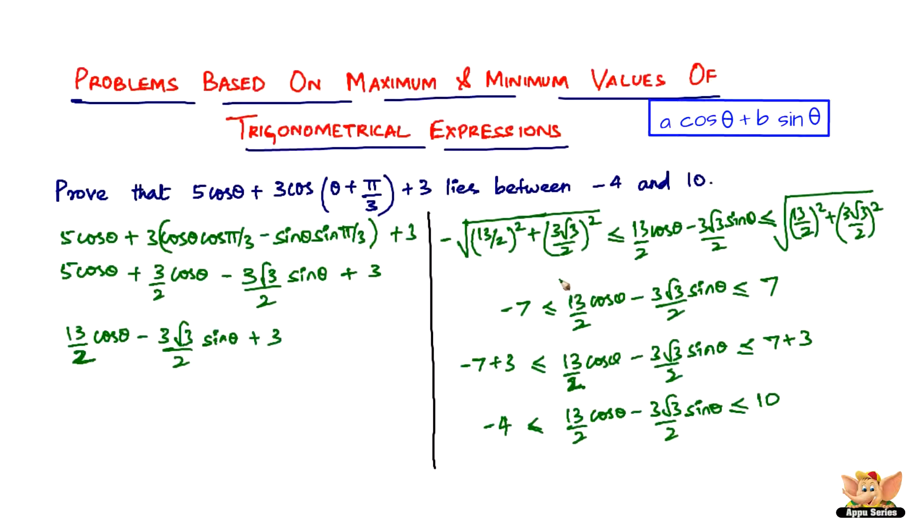So all that we have to do is just manipulate slightly. Since you're doing it equally on both the sides, it doesn't matter. You eventually show that it does lie between minus 4 and 10. Alright, so that ends this problem as well as this video. I'll see you in the forthcoming videos with more concepts on trigonometry.